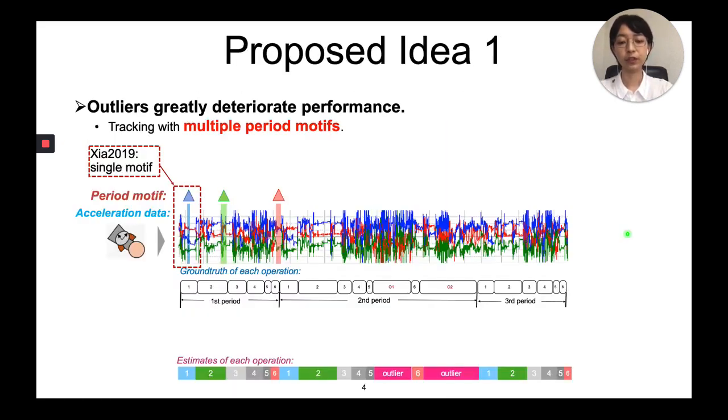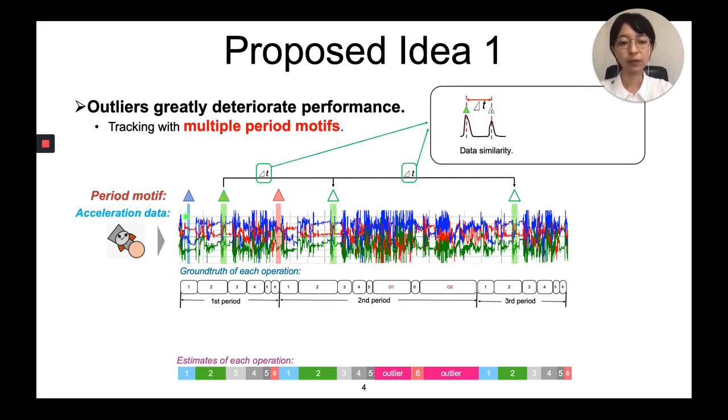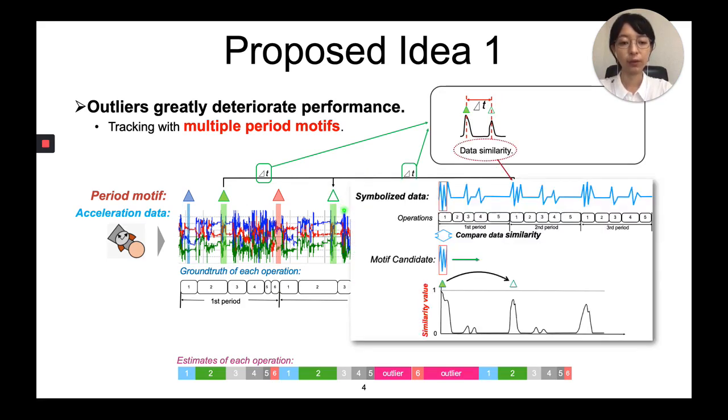As for the first challenge, since we only found a single motif last year, it's difficult to determine the location of the outliers only by a single motif. So in this year, we looked for several multiple motifs. And for the best motif we discovered, we track the next occurrence of the motif with the highest sensor data similarity in the following working periods, where the similarity series is calculated from the autocorrelation of the motif candidates.